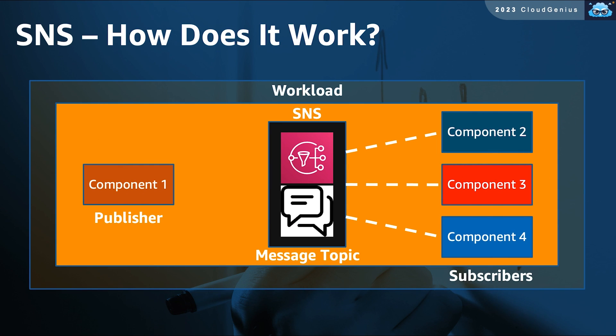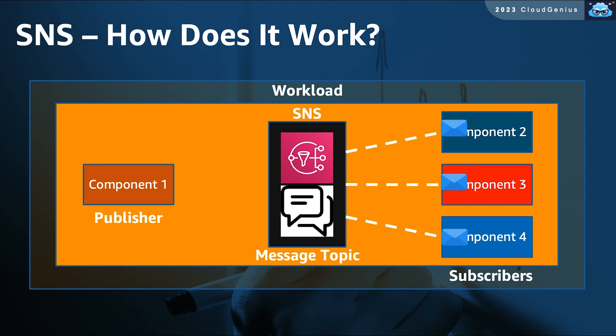Watch this animation that shows how, when a publisher publishes a new message to the message topic, SNS immediately replicates and sends the message to every subscriber on the subscriber list for that message topic. Messages are immediately pushed. But what happens when the receiving side is busy at the moment the message is being pushed? The result could be an application error, or the message is simply dropped and lost.